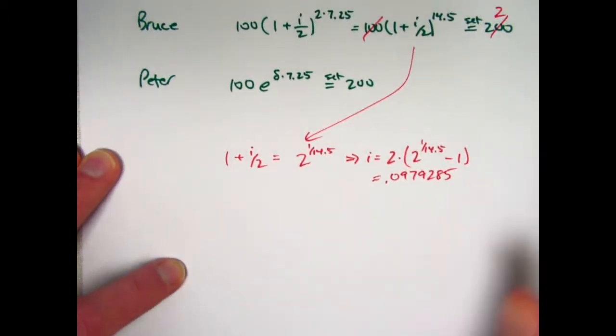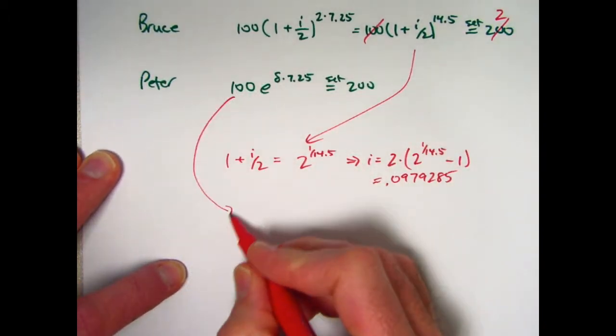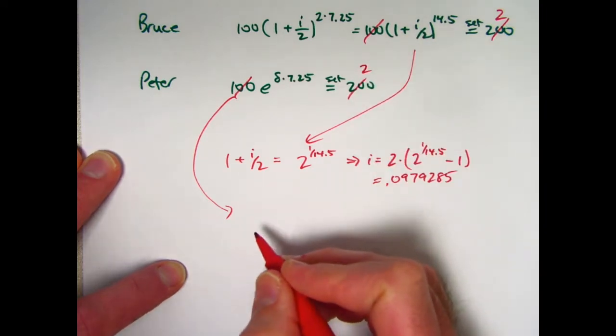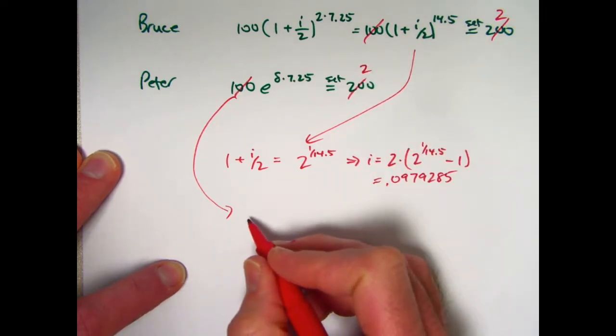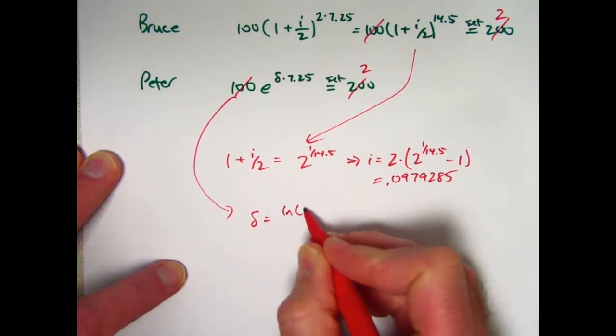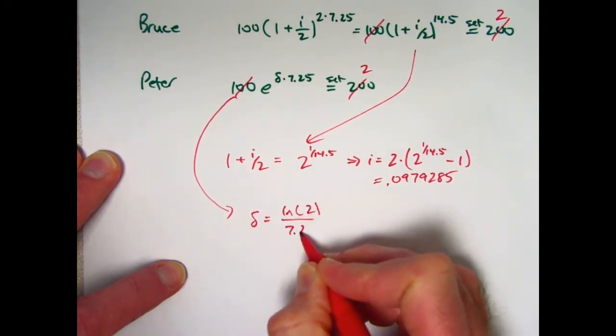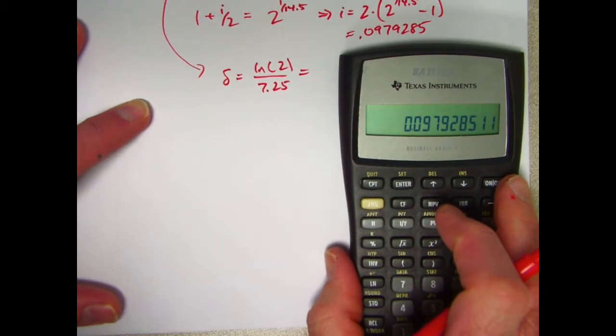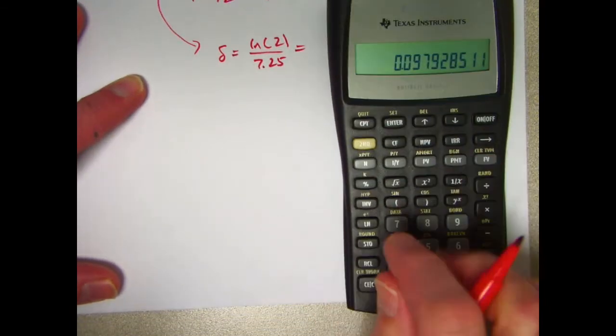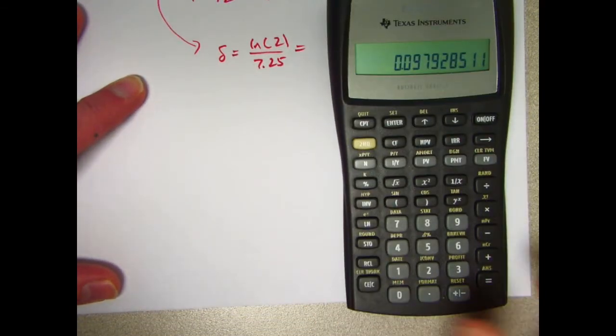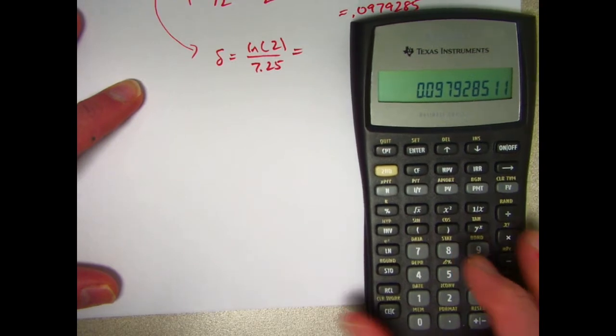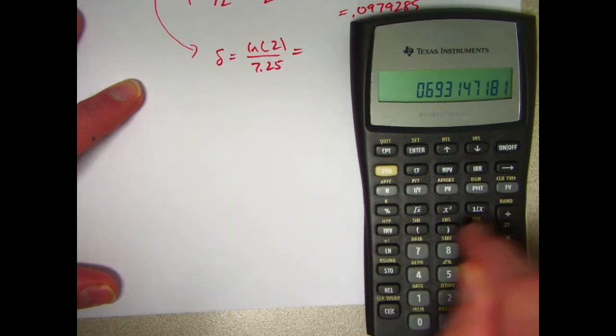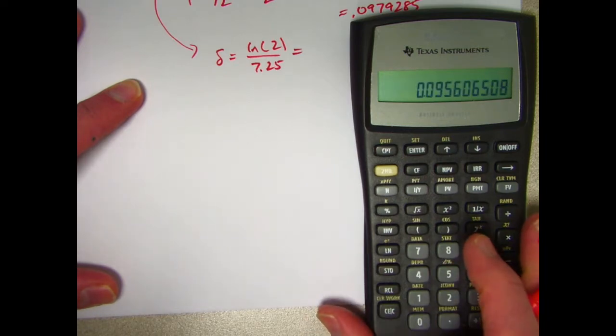All right. Not too bad. Now solve this equation for delta. Once again, divide both sides by 100. Then take the natural log of both sides and divide by 7.25. You'll get delta is natural log of 2 divided by 7.25. That one's a little easier to solve. Well, let me store i now also here in register 1. What is delta? Natural log of 2 is this. Divide by 7.25. That's delta.